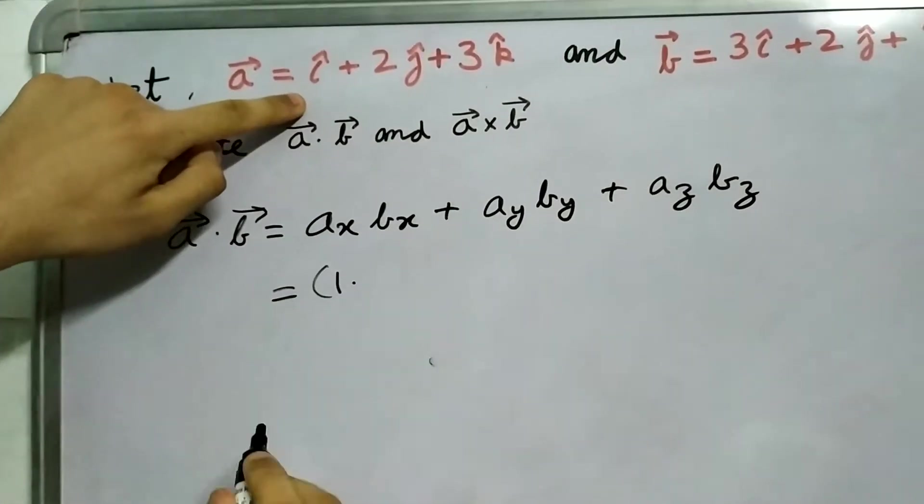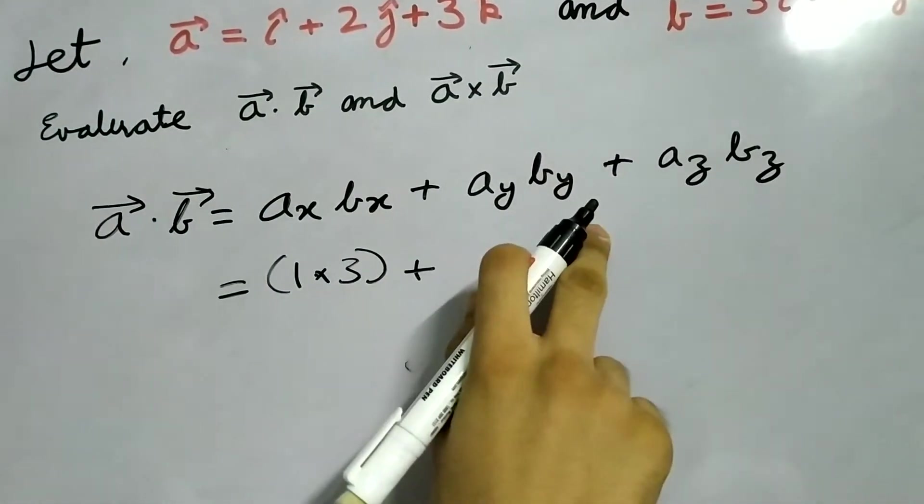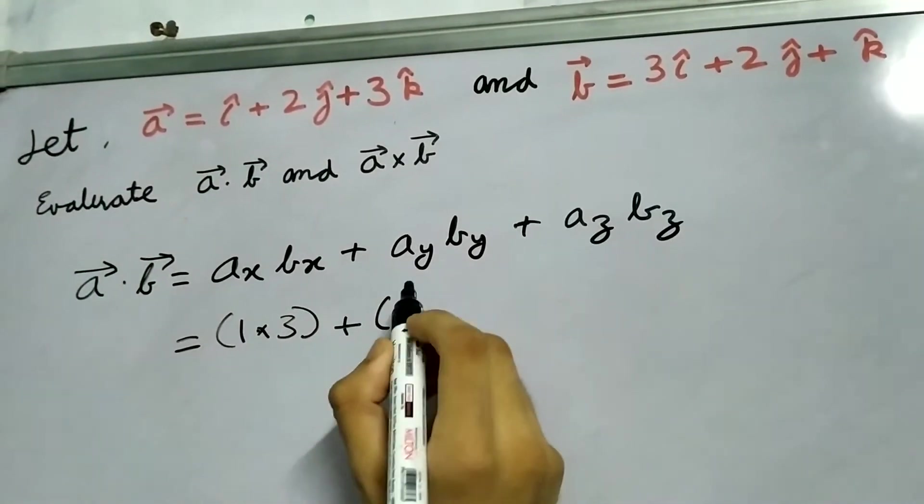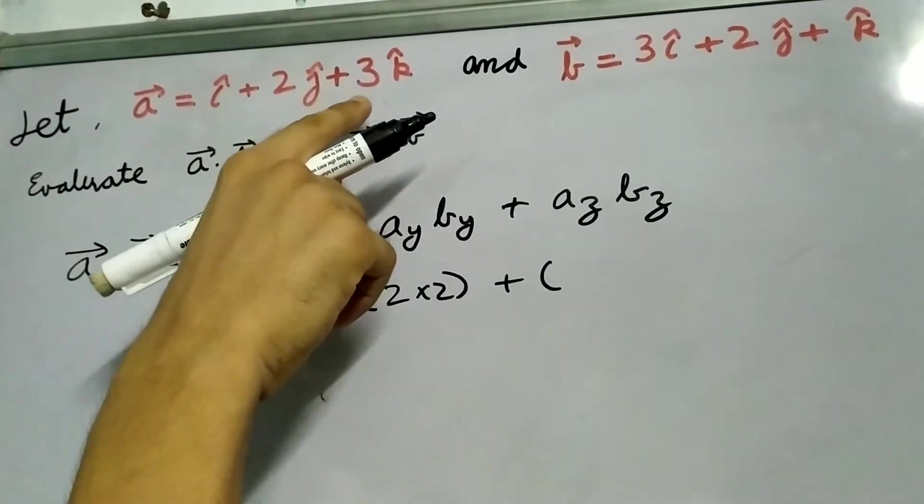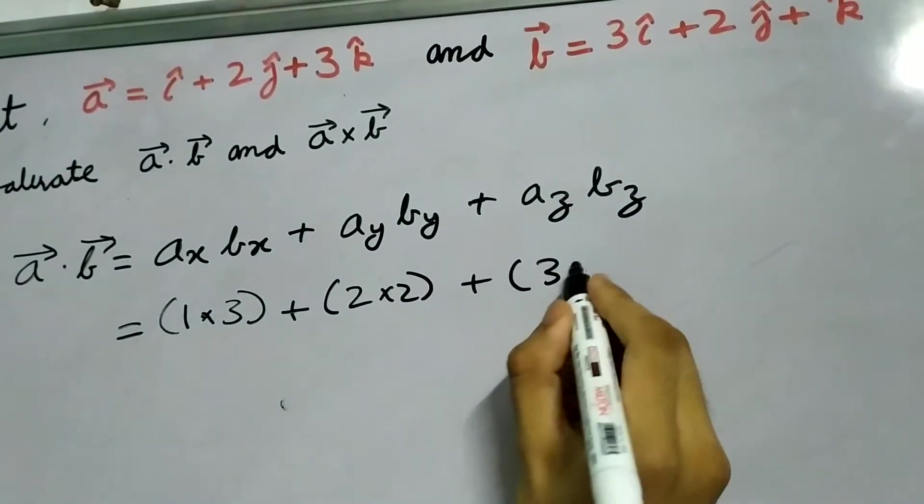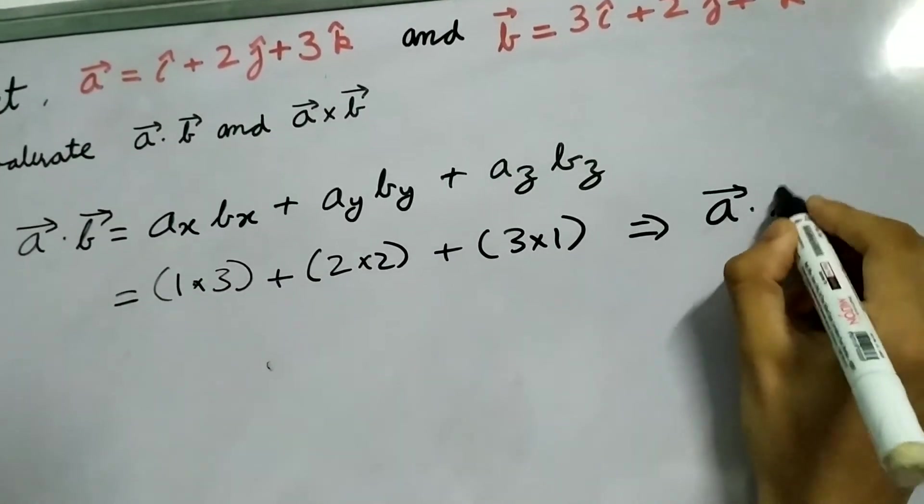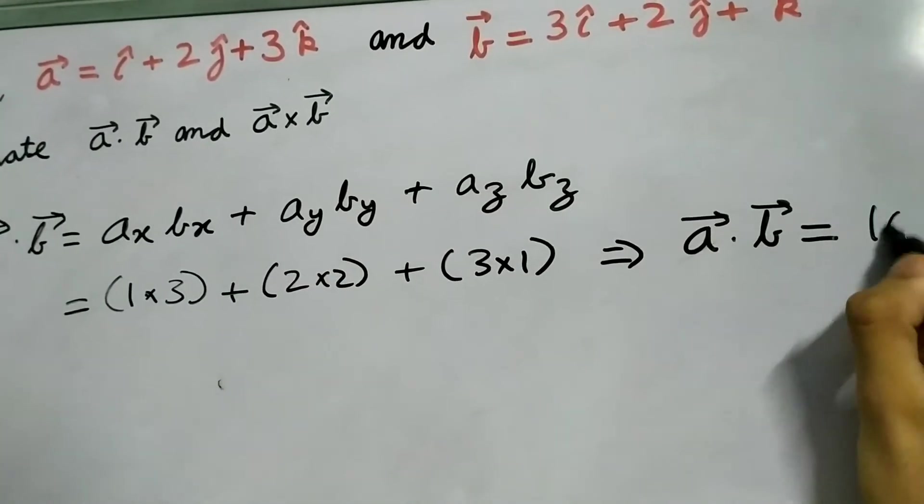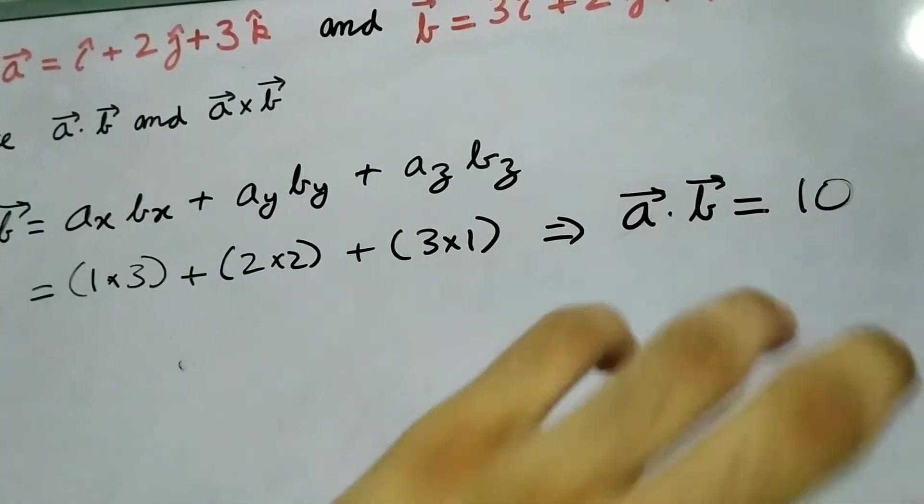So A_x is 1 into B_x which is 3 plus A_y B_y. A_y is 2, B_y is 2, so 2 into 2 plus A_z B_z, 3 into 1. And easily we get A dot B is equal to 3 plus 4 plus 3 which is 10. It is a scalar quantity. It has only magnitude, no direction.